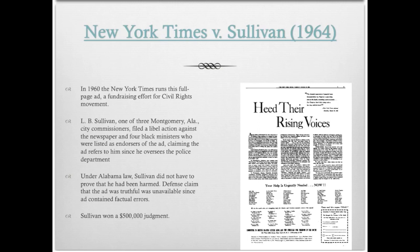The first one is New York Times v. Sullivan. This had to do with an ad that ran in a 1960 issue of the New York Times that was a fundraising effort for the Civil Rights Movement, and it called out the police of Montgomery, Alabama for a variety of charges related to Martin Luther King's peaceful demonstrations.